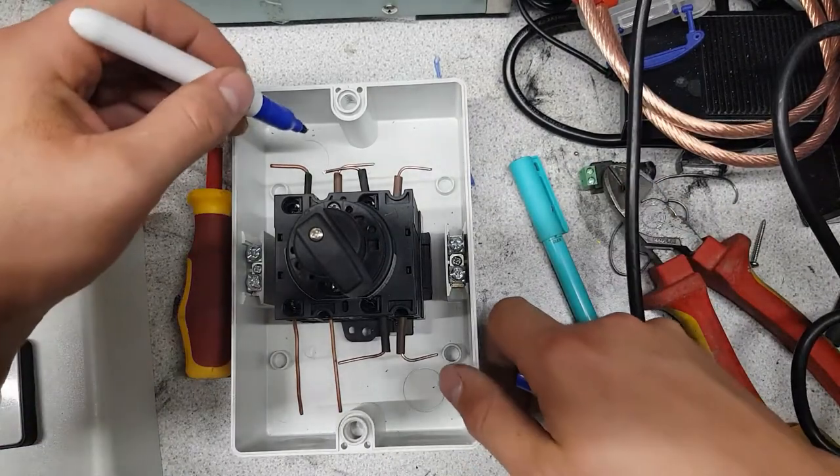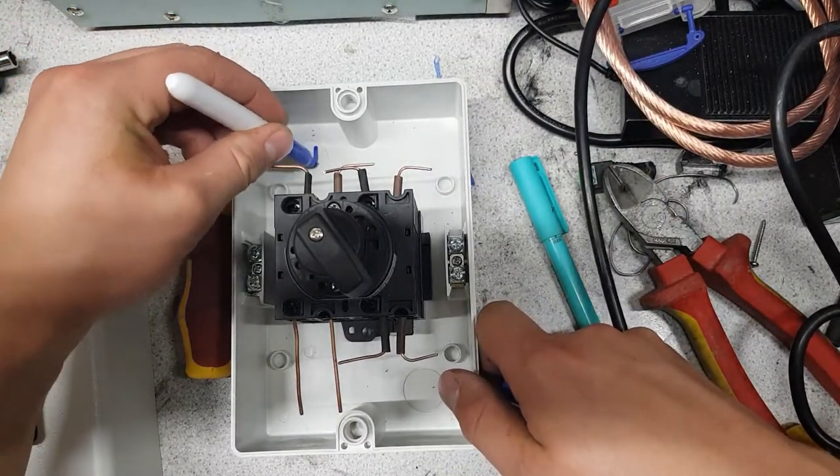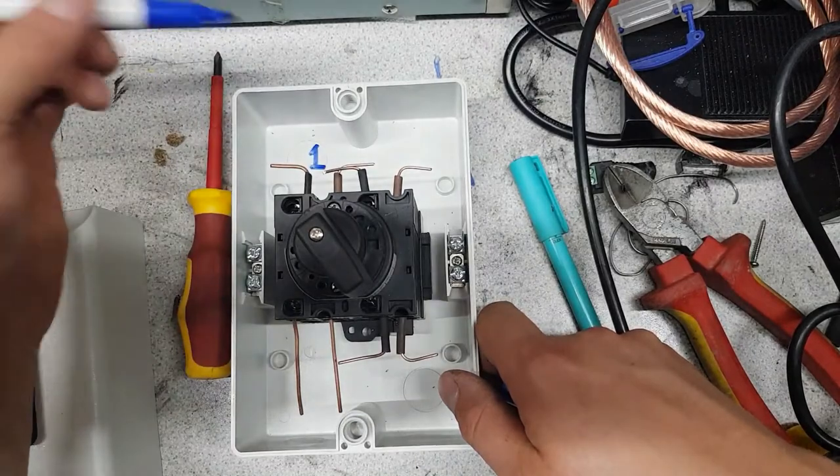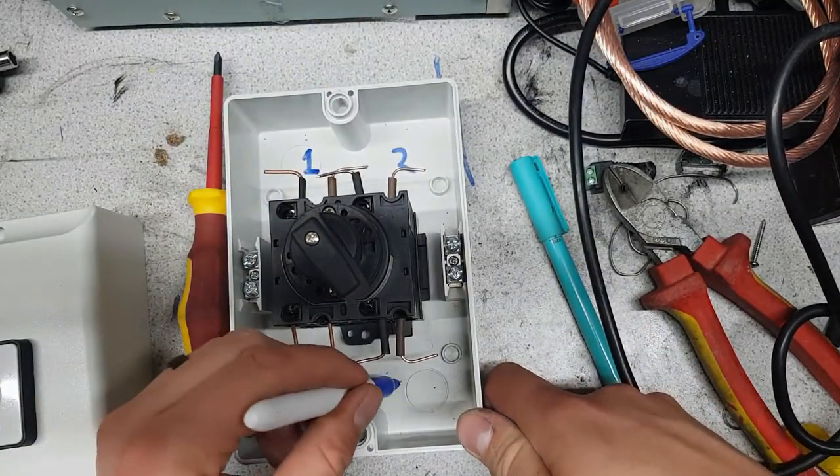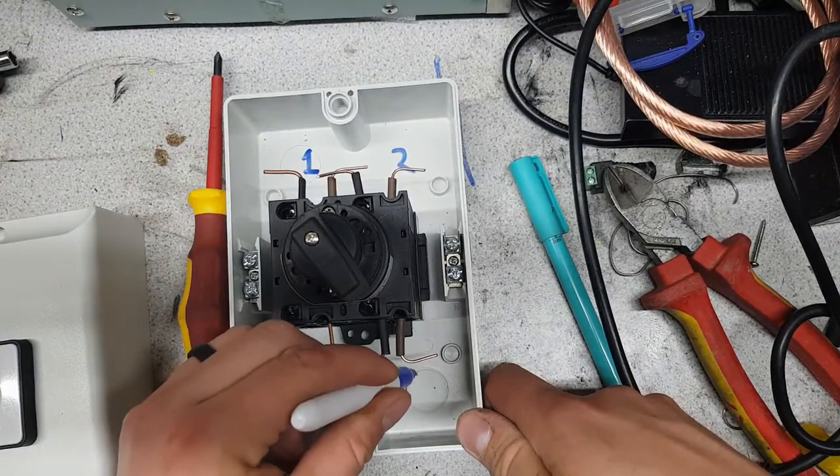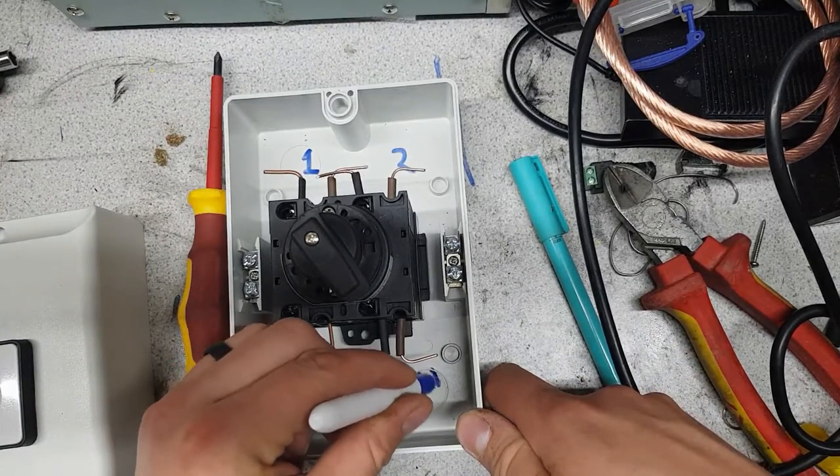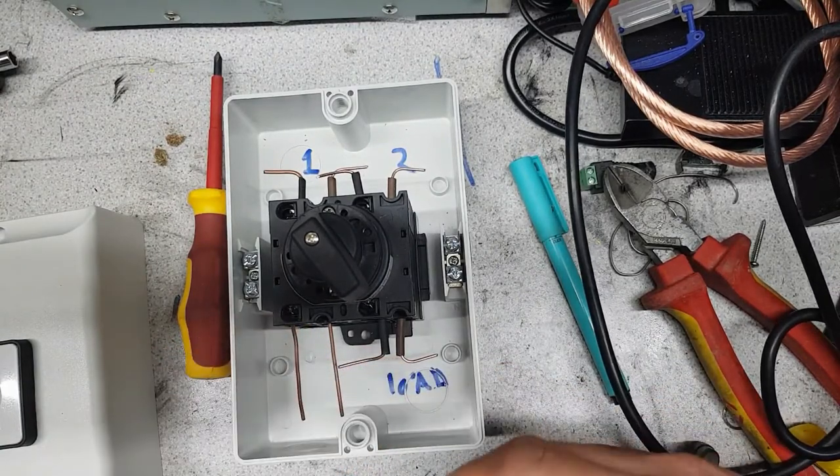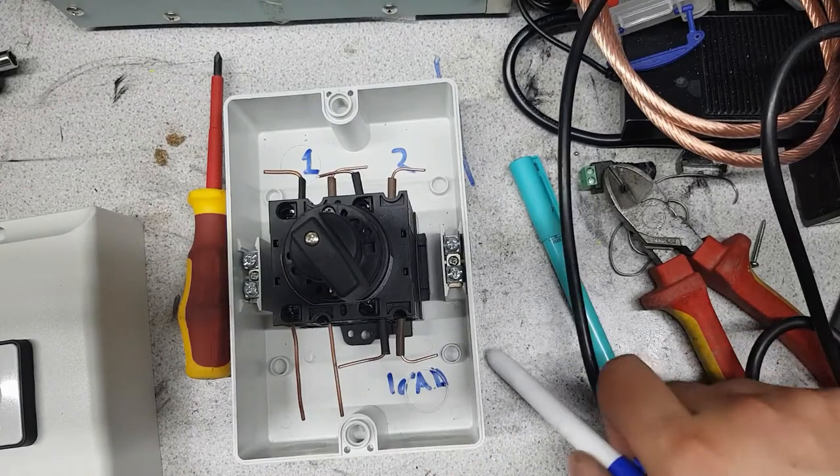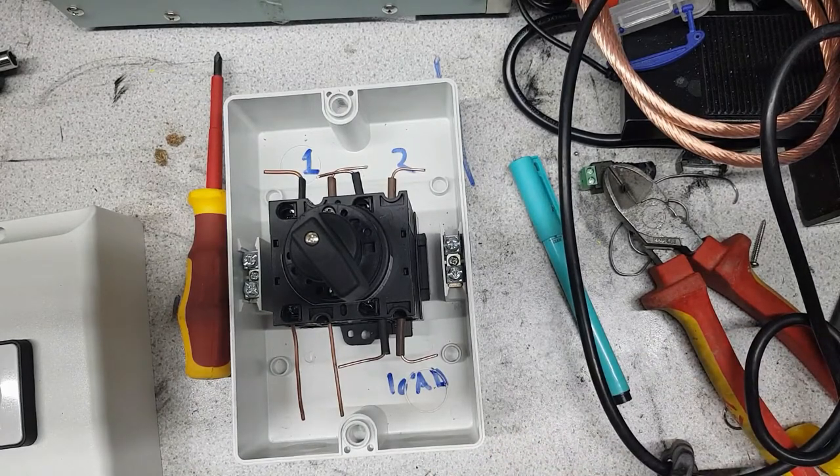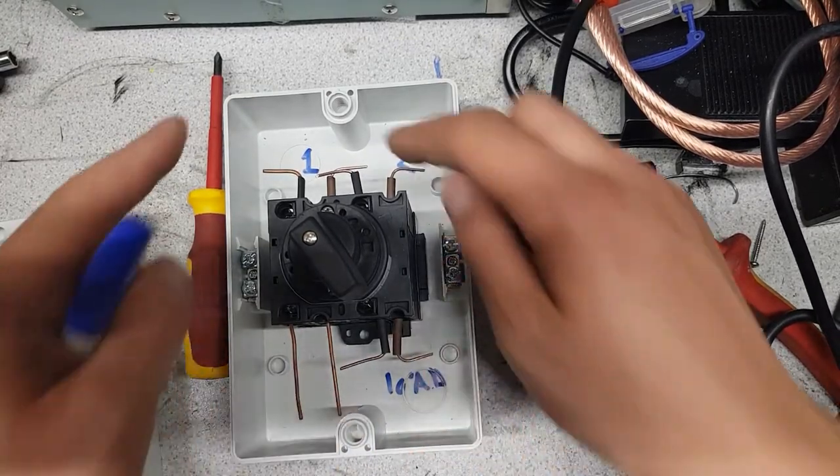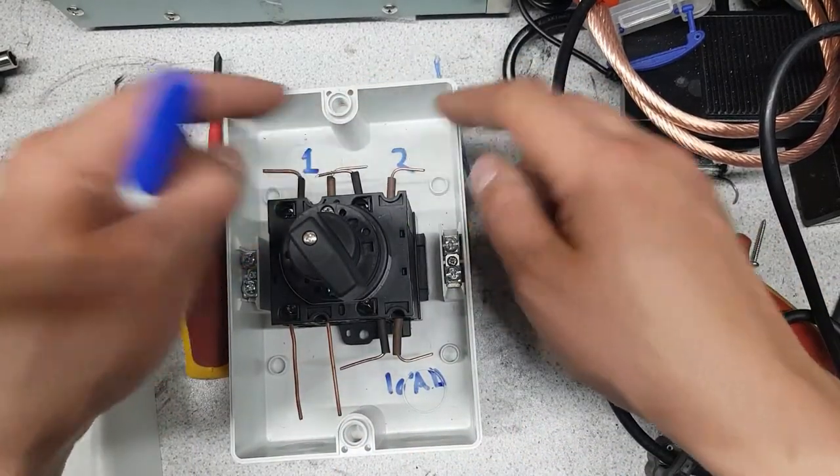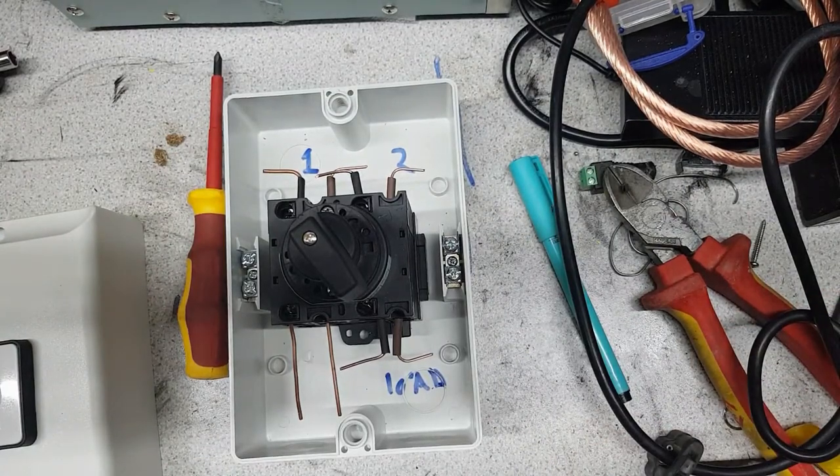So what we could do is use these top two terminals as supply number one and supply number two, and down here we would have load. Similarly, if you're doing this the other way round, you can have your supply coming in here and take your load off here or here, if you're using, say, for example, one supply in a workshop.